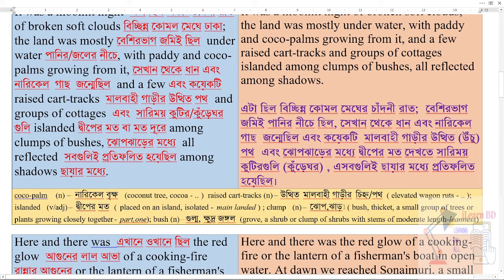Clump shabda-r ortha hoche jhob bha jhar. Jhar synonym hoche bush, thicket, a small group of trees or plants growing closely together. Antonym hoche part bha one. Bush shabda-r ortha hoche gulma bha khudr jongol — ekhane khudr jongol hisebe bhabarit hoche. Jhar synonym hoche groove, a shrub or clump of shrubs with stems of moderate length. Antonym hoche landes.